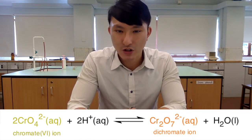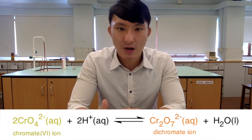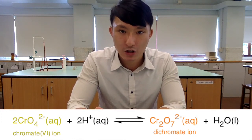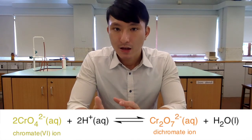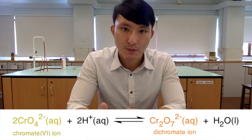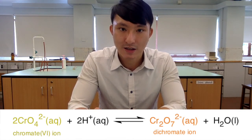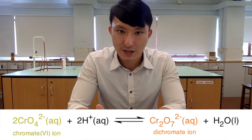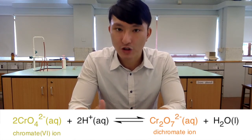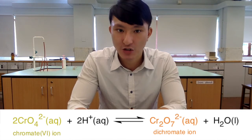The reason we do not see any obvious observation is that the solution itself is originally orange in color. When we add acid into the system, there is an increase in H+ concentration, and therefore the equilibrium shifts to the right, producing more orange dichromate ions. When we add sodium hydroxide, the solution changes from orange to yellow because the NaOH neutralizes some of the acid, decreasing H+ concentration and shifting the equilibrium to the left, consuming orange dichromate and producing more yellow chromate ion.